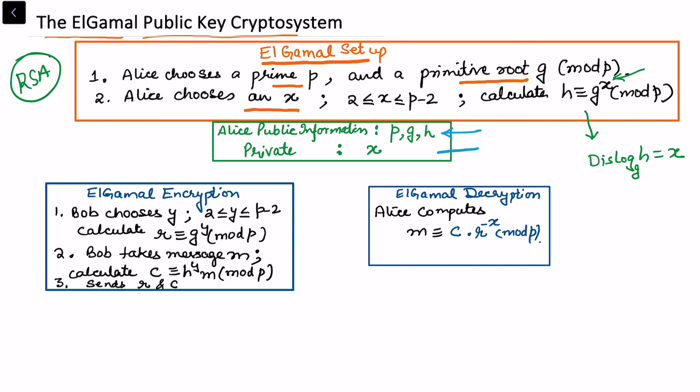Now in the encryption, suppose Bob wants to send some message. By looking at Alice's public information, Bob first chooses y, again y lies between 2 and p minus 2.